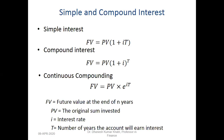For continuous compounding — where compounding takes place every moment — the formula is: FV = PV × e^(i×t), where i is the annual rate of interest and t is the time duration. This uses the exponential function e.